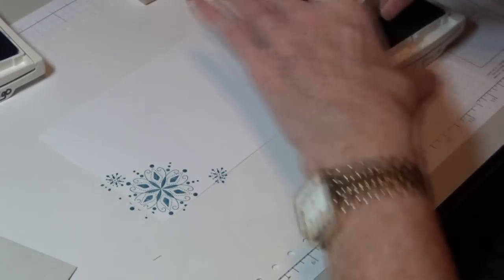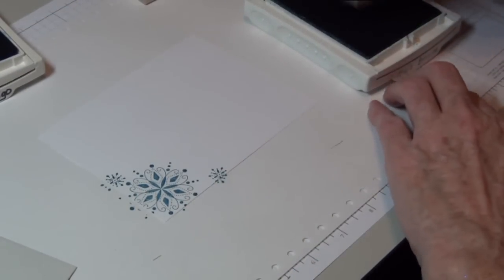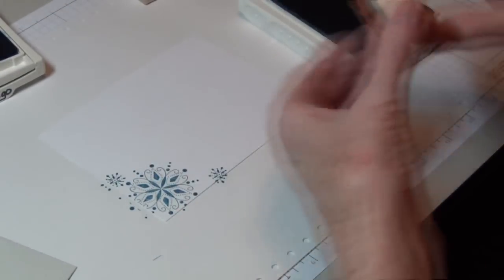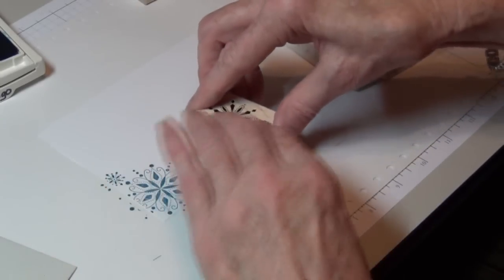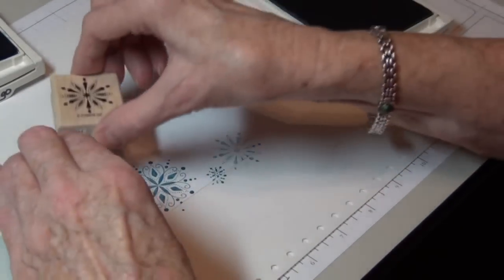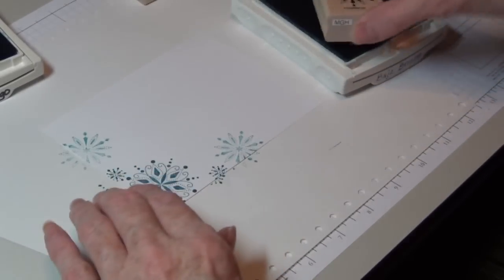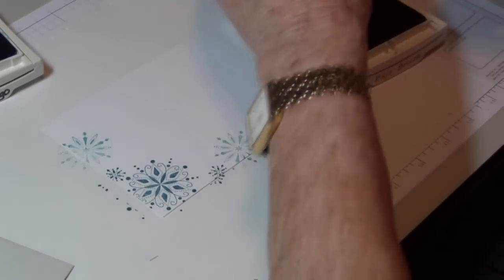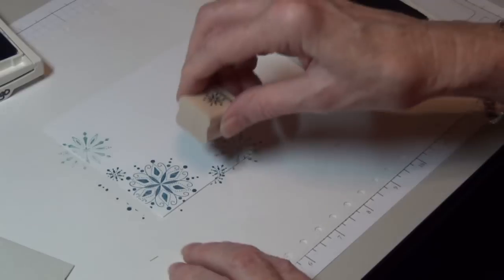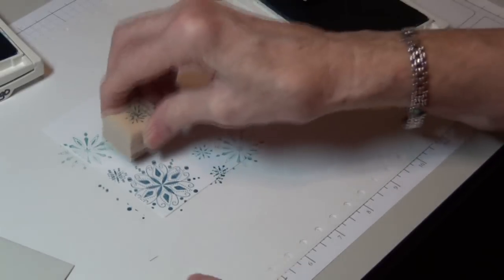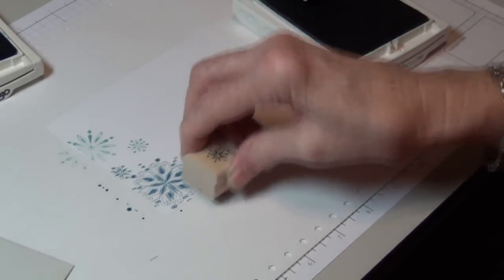I'm using the Island Indigo and I'm also combining that with the Baja Breeze. And this is a gorgeous set. I'm stamping off, stamping off of the paper. It's more pleasing to the eye. Let's just add some of our little snowflakes into that.